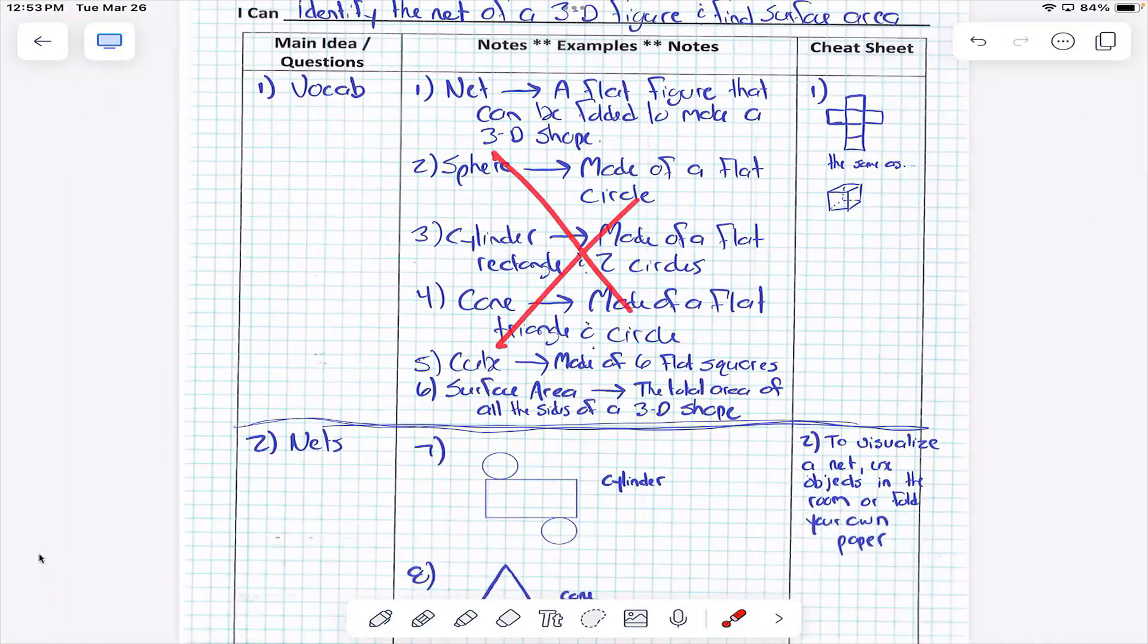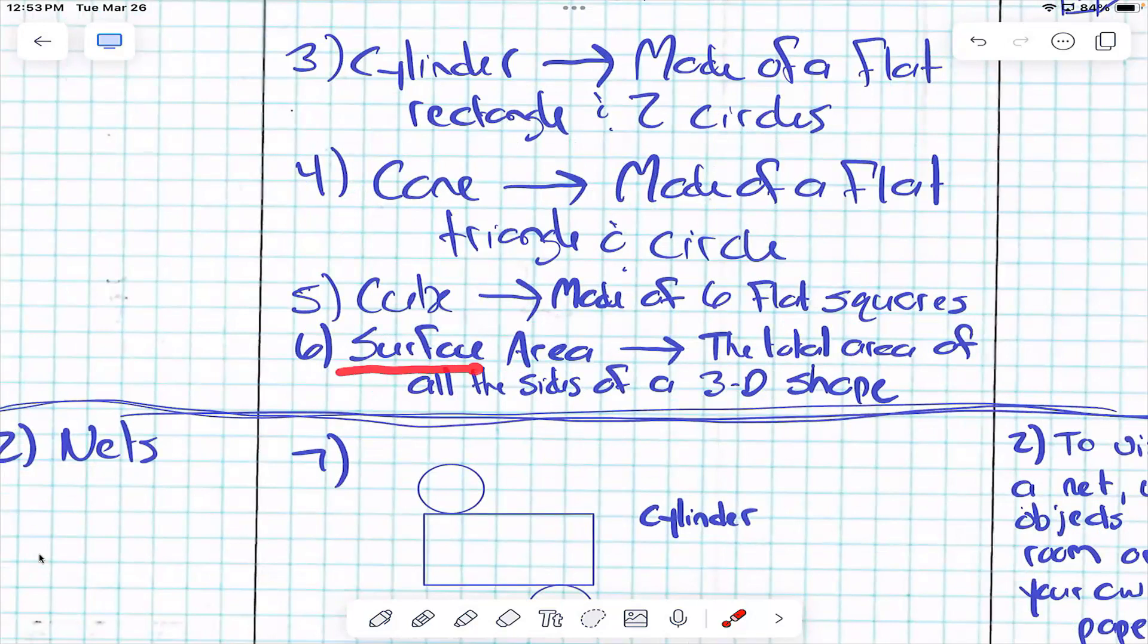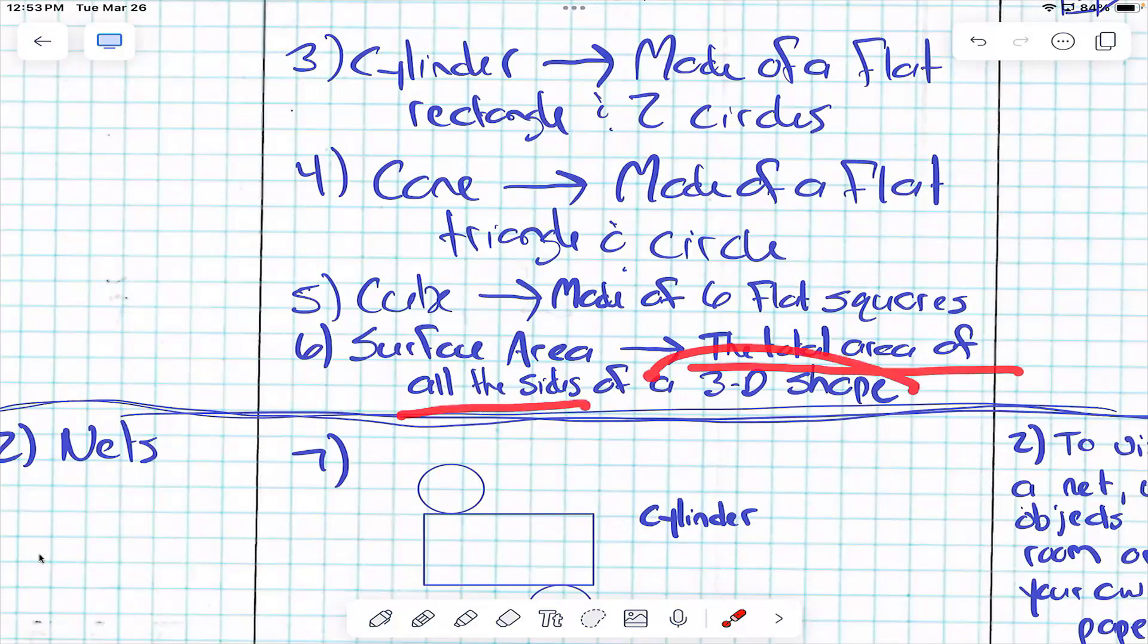All of these words are different shapes that you probably already know. Six, surface area. Surface area is what we're going to talk about at the end of this video. It is the total area of all sides of what kind of shape? 3D shape.